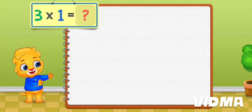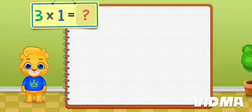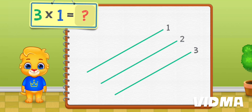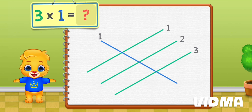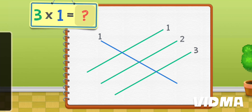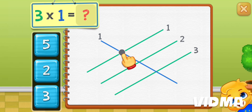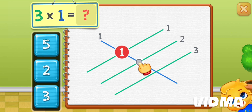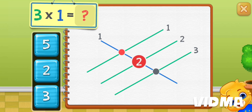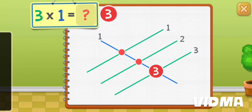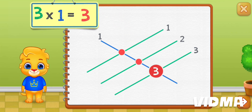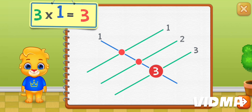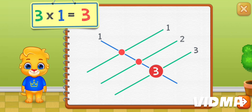Let's learn to multiply using the stick method. Three times one equals — count the intersection points: one, two, three. Three times one equals three.